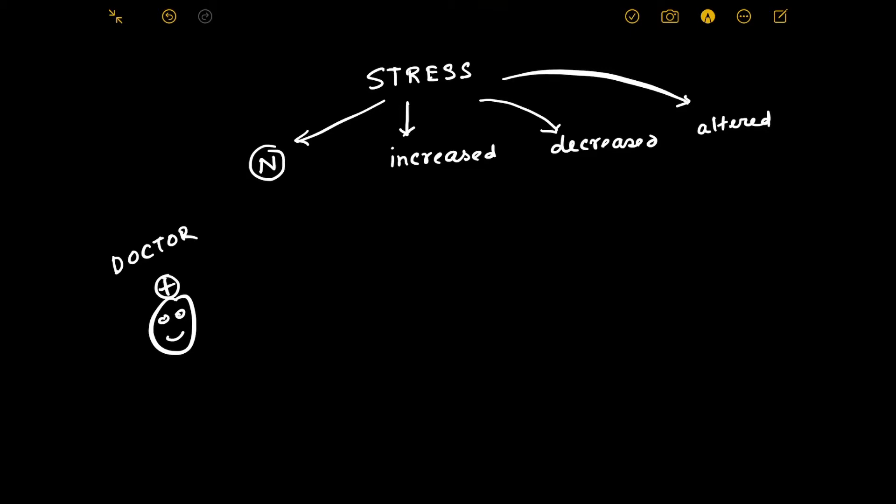So there is a doctor. If the doctor is seeing 10 patients in a clinic and that is the normal amount of stress for the doctor, the doctor will be happy with his work. But now if 20 patients start to come in a day, then that will be increased stress for the doctor. If only two patients come to the clinic one day, then that will be decreased stress for the doctor.